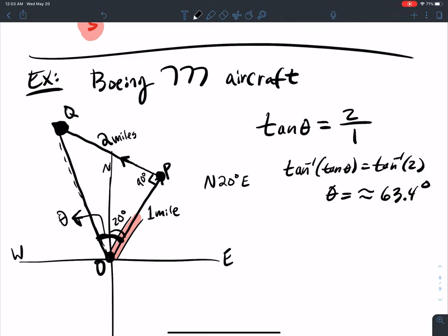Now, if this whole angle is 63.4 degrees, I don't want that whole angle. I want this angle here, because my relation will be north whatever my angle west. So I've got to take off this 20 degrees. I do 63.4 degrees minus 20 degrees, which gets me 43.4 degrees.